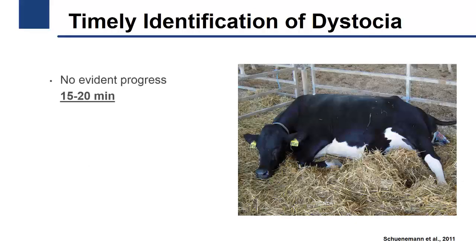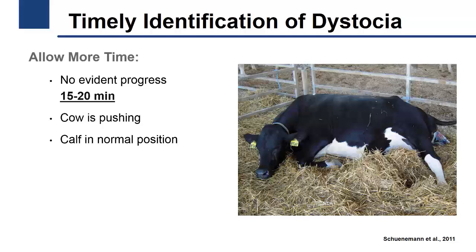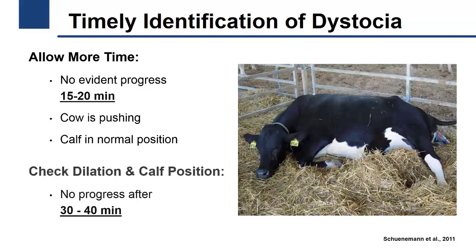If there is no evident progress after 15 to 20 minutes from the start of labor, but the cow is pushing and the calf appears to be in a normal position, allow more time. If after 30 to 40 minutes there is still no progress, maternity employees should check the dilation of the birth canal and the calf position.